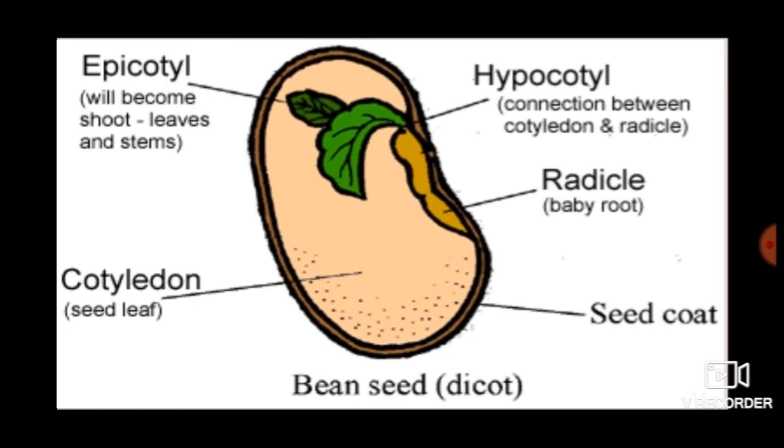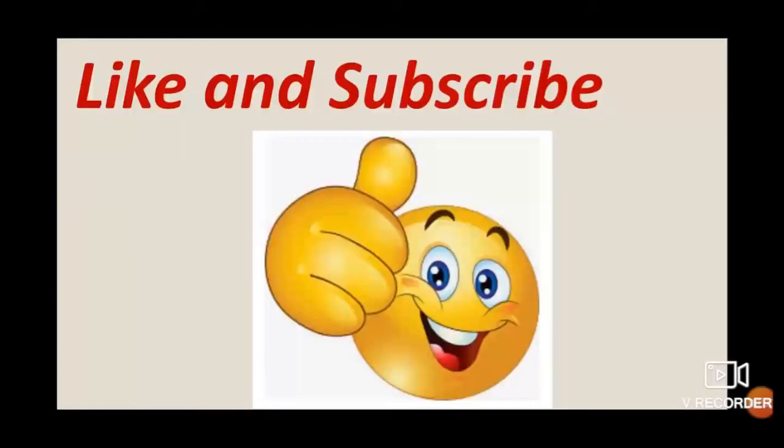When the seed gets enough air, water, and warmth or sunlight, a tiny plant called the seedling grows out. The process of growth of a seedling from a seed is called germination.